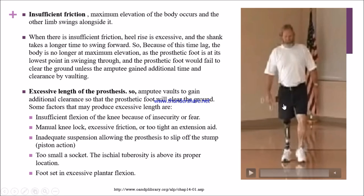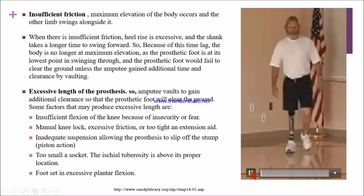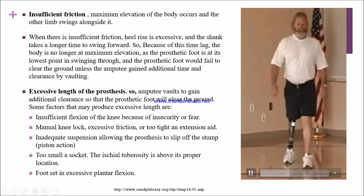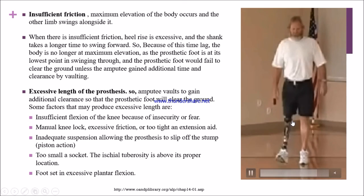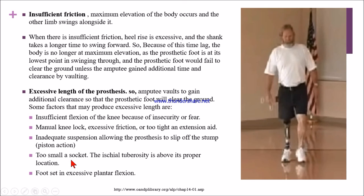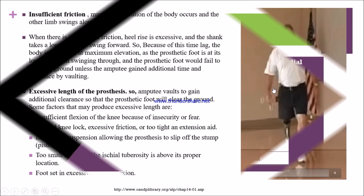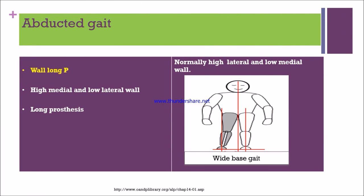During pistoning action, the patient will vault to clear the ground. If the socket is too small, pressure is felt at the ischial tuberosity above its proper location, causing vaulting. If the patient has excessive plantar flexion, the knee remains in extension and they will vault.